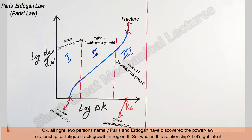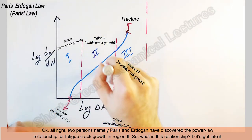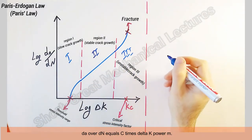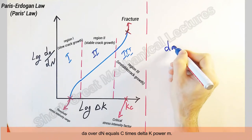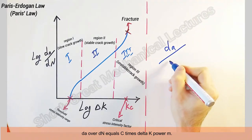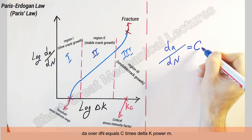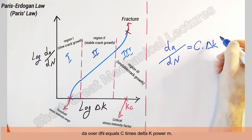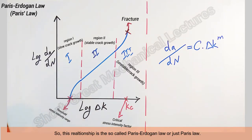Two persons, namely Paris and Erdogan, have discovered this law relationship for fatigue crack growth in region two. So what is this relationship? Let's get into it. da/dN equals C times delta K power m. This relationship is the so-called Paris-Erdogan law or just Paris law.